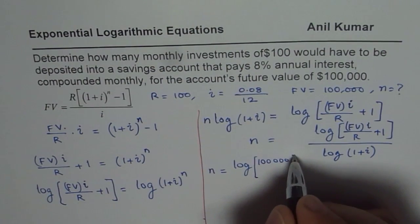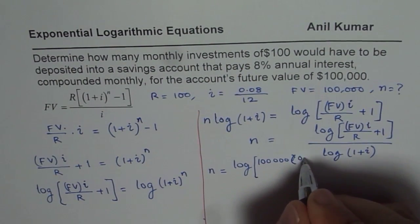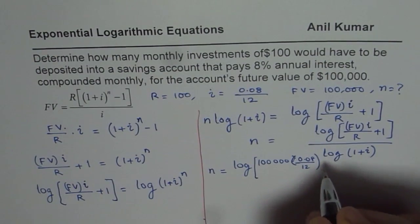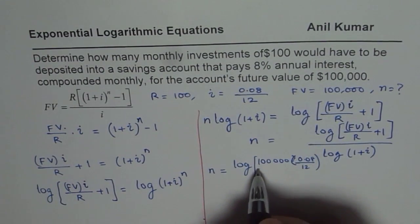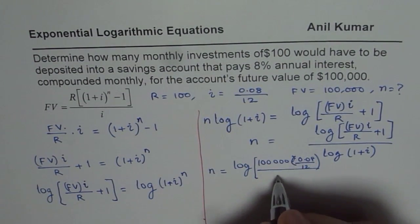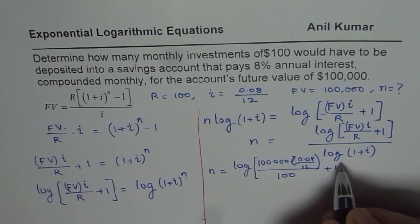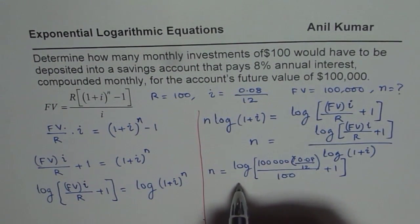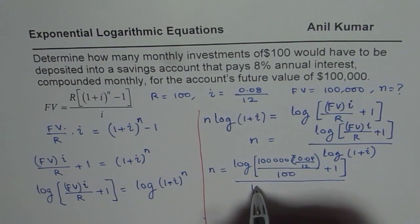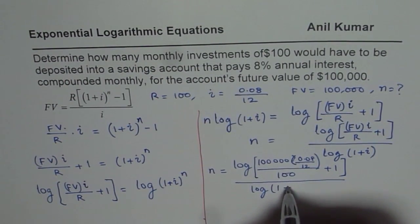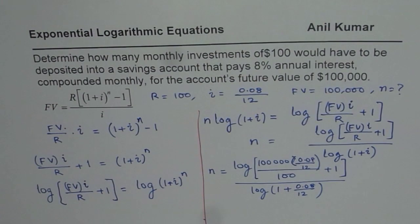So we have 100,000 times i, which is 0.08 over 12, divided by R which is 100, plus 1, bracket close. Divided by log of 1 plus 0.08 over 12. So that is the formula which you should be using to calculate N.